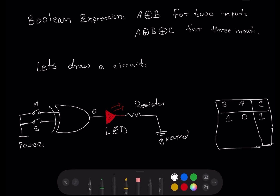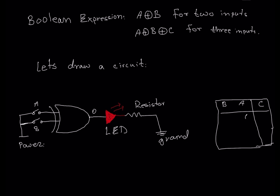The first condition: if both inputs are low, the output is low. If input A is high and input B is low, the output will be high — because the odd number of inputs is high. If input A is low and input B is high, the output will be high. If both inputs are high, the output will be low. This is the truth table for the two-input XOR gate. The only condition to be high is when an odd number of inputs are high.